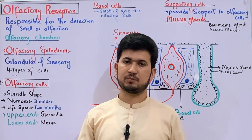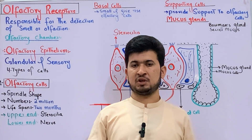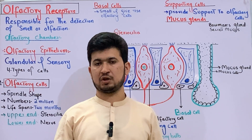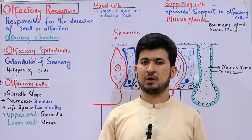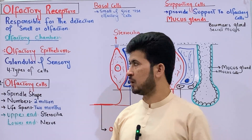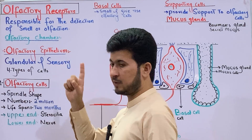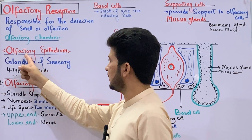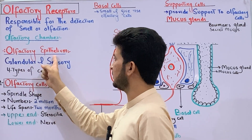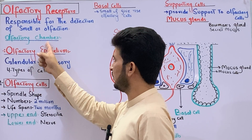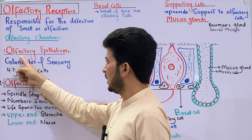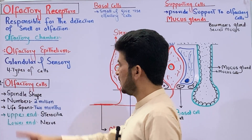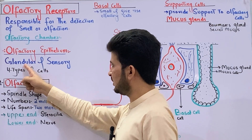In the human respiratory system, the human nose has 3 chambers: the vestibular chamber, the respiratory chamber, and the olfactory chamber. In the olfactory chamber, there is a membrane, and on it there is an epithelium. This membrane is called the olfactory epithelium.